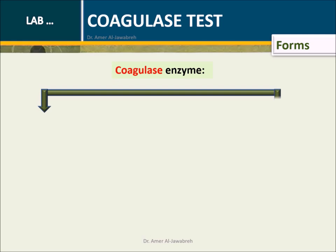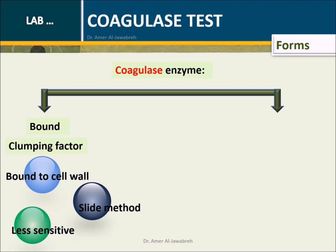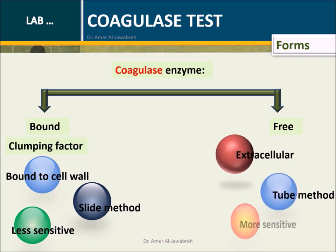Forms of coagulase enzyme: The bound form, also called clumping factor, is bound to the cell wall and detected by the slide method; it is less sensitive. The free form is extracellular, detected by the tube method, and is more sensitive.